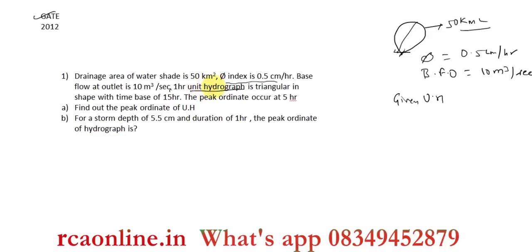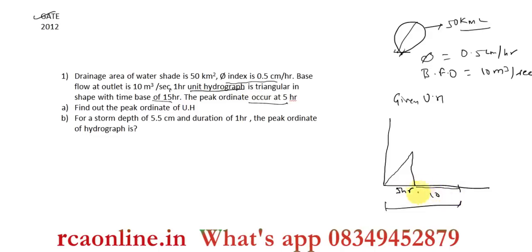The unit hydrograph is triangular in shape with a time base of 15 hours and peak ordinate occurring at 5 hours. Plotting it: peak at 5 hours, base extending to 15 hours. For a unit hydrograph, rainfall is always 1 centimeter. The first part asks to find the peak ordinate Q of the unit hydrograph.